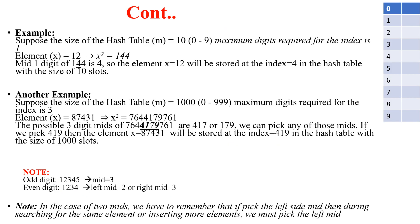I will now explain with an example. My table size is 10, so the index range is 0 to 9, which means R equal to 1. The given key element is 12. I will square 12 to get 144. With R equal to 1, I need 1 middle digit. The middle digit of 144 is 4, so the index is 4. The key 12 is going to be stored at the 4th index.